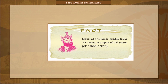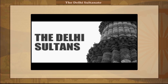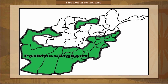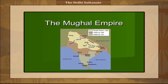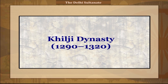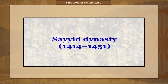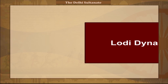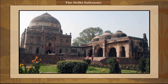The Delhi Sultanate is a term used to cover five short-lived dynasties — Delhi-based kingdoms or Sultanates, mostly of Turkic and Pashtun Afghan origin — in medieval India. The Sultanates ruled from Delhi between 1206 and 1526, when the last was replaced by the Mughal dynasty. The five dynasties were: the Mamluk dynasty (1206–1290), the Khilji dynasty (1290–1320), the Tughlaq dynasty (1320–1414), the Syed dynasty (1414–1451), and the Afghan Lodi dynasty (1451–1526).